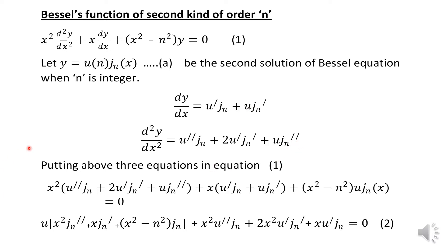Now putting these expressions for y, dy/dx, and d²y/dx² into the Bessel equation, we get: x²(u''·Jn + 2u'·Jn' + u·Jn'') + x(u'·Jn + u·Jn') + (x² − n²)·u·Jn = 0.